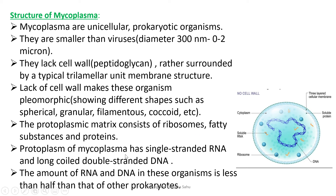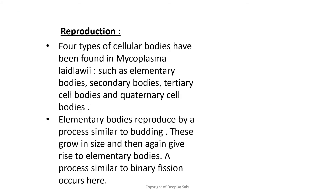The protoplasm of mycoplasma contains single-stranded RNA and long coiled double-stranded DNA — this is very important for exams. Mycoplasma have both single-stranded RNA and double-stranded DNA distributed throughout the protoplasm. The amount of RNA and DNA in these organisms is less than half of that found in other prokaryotes.